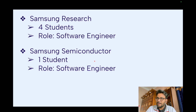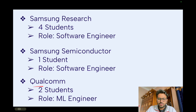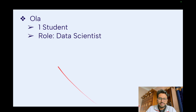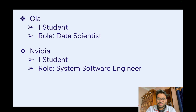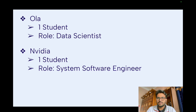Samsung Semiconductor took one student for a Software Engineer role. Qualcomm took two students for an ML Engineer or Data Scientist role. Ola took one student for Data Scientist. NVIDIA took one student for System Software Engineer. NVIDIA is a system-level company famous for producing GPUs, so they hired for system-level jobs.